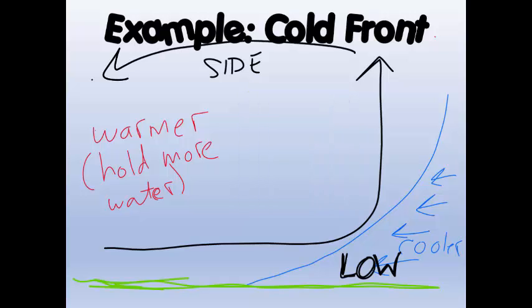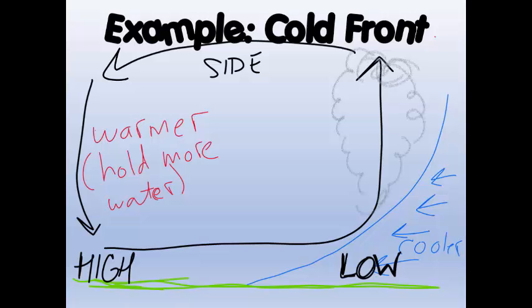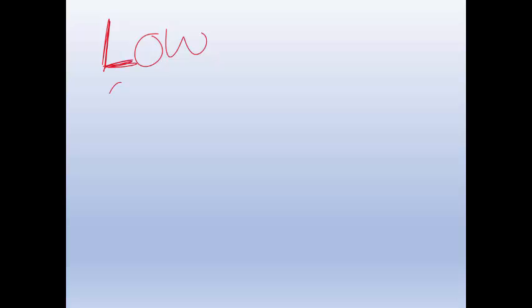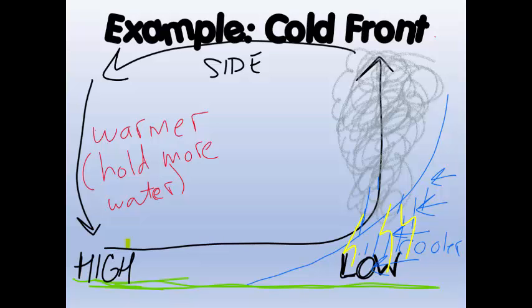As the air continues to rise, the warm moist air starts to cool. When it does, it forms clouds — the water can't stay in the air anymore. You end up with big, huge dark clouds, and eventually it starts to rain. You can even end up with lightning. So when we think about low pressure, think about lousy weather — storms and nasty conditions. Way out where we have high pressure, there are no clouds in the sky.